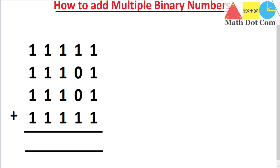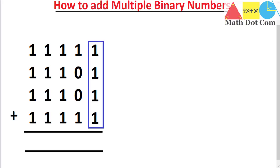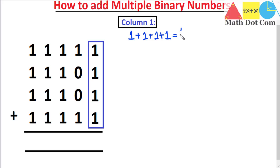First of all, we have to add them bit by bit in columns, moving from right to left. This is the rightmost column where we add all the bits of that column. In column one we have four ones, so one plus one plus one plus one equals four in decimal. Since we are doing addition of binary numbers, we must have a combination of zeros and ones, so we have to convert this four into a binary number. This four is in decimal.